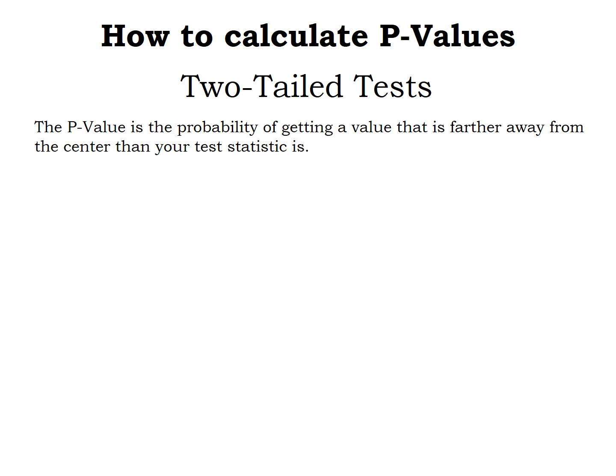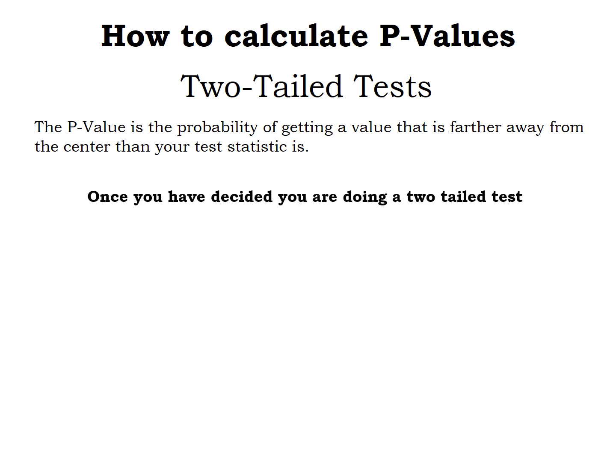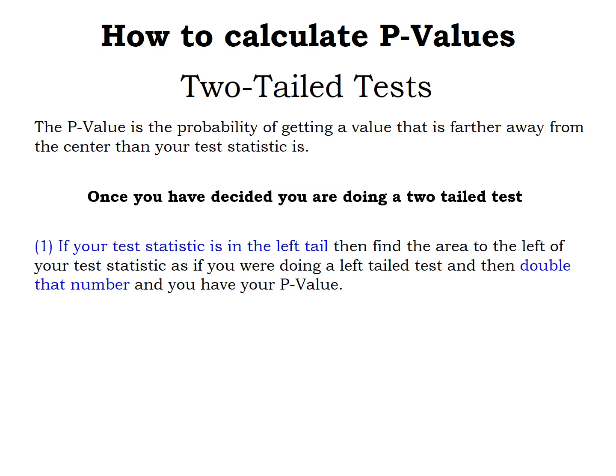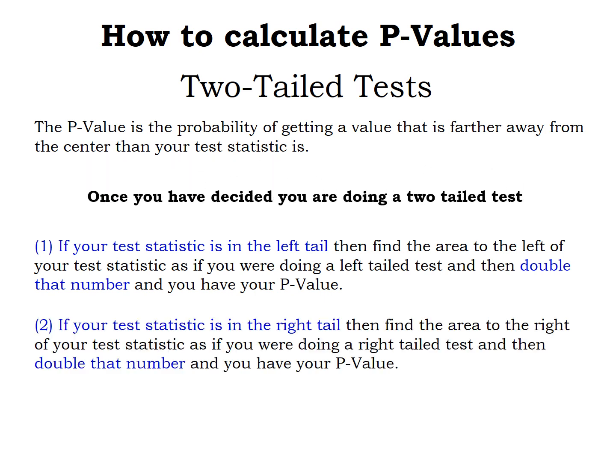After you've determined you're doing a two-tailed test, if your test statistic is in the left tail, find the area to the left just like it was a left-tailed test, then double that to account for the unseen but equally valid right tail. If the test statistic is in the right tail, find the area to the right and double that.